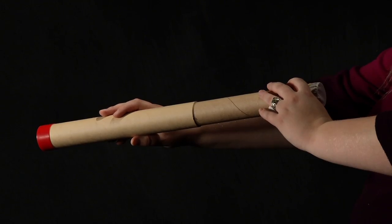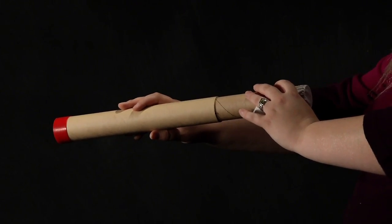Point your telescope at a clear light bulb and look at, not through, the tissue paper. By sliding the smaller tube in and out of the larger tube, you can bring an image of the light bulb's filament into focus on the tissue paper.